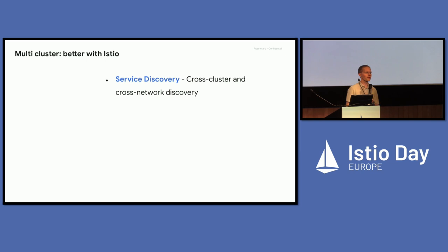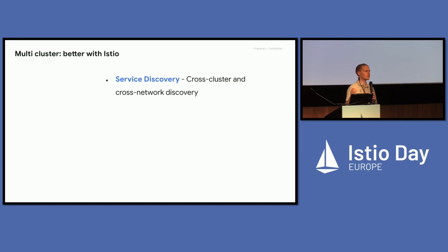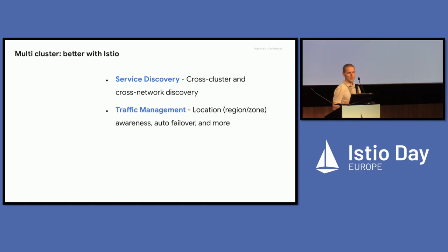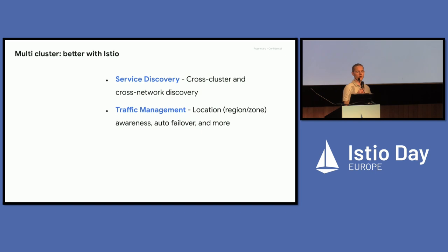Kubernetes folks are doing a really good job making multi-cluster easier. But with Istio, we've got some really good patterns. To architect things reliably, we often need multi-cluster. Some of the main features Istio offers here: service discovery — Istio can connect multiple clusters and even multiple different networks, allowing communication between all of them just as if it was a single cluster. Traffic management includes canary rules, header manipulation, routing, plus multi-cluster specific aspects like location-aware rules to keep traffic within a zone or region, and automatic failover between zones.